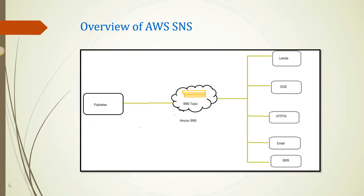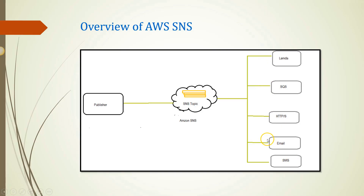Now let's see the overview of AWS SNS. Here you can see the figure of AWS SNS which has a publisher that publishes messages using SNS to different endpoints. These endpoints include Lambda, SQS, HTTP, HTTPS, Email, and SMS. Depending on your need and requirement, you can select the protocol.